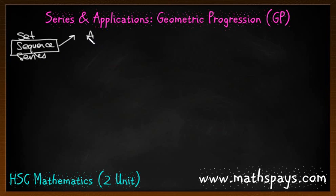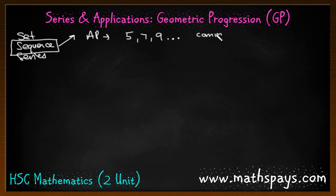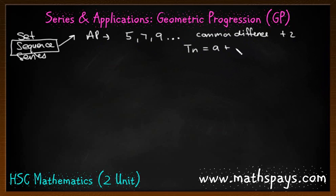Just as a quick review, we looked at an arithmetic sequence the other day — something like 5, 7 and 9. It was arithmetic because it went up by a common difference, and this common difference, for example in that question, was plus 2. So that's where we brought in the rule: Tn equals a plus n minus 1 times d — times that common difference.